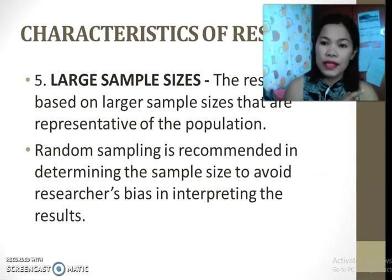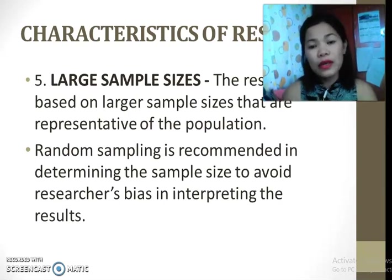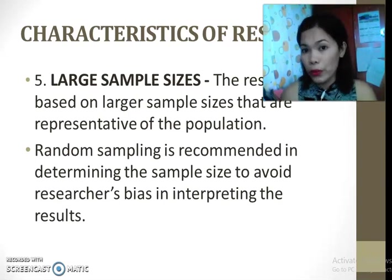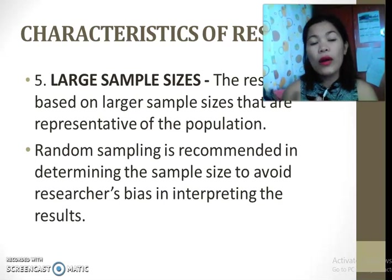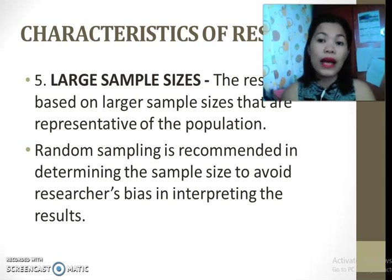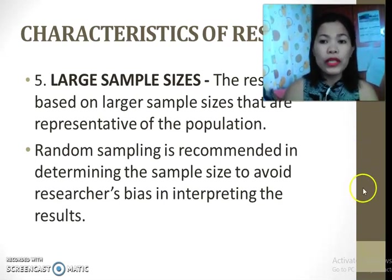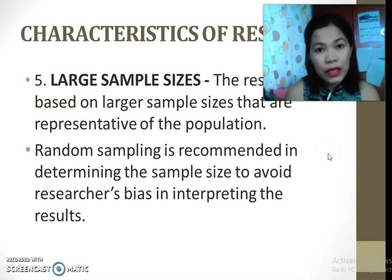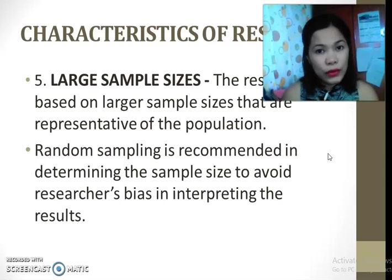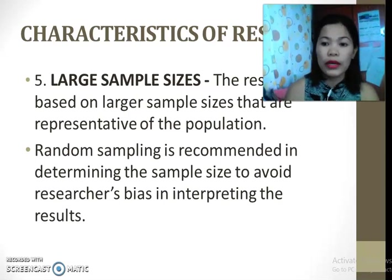Another characteristic is large sample sizes. In qualitative research, even one person or as few as ten persons as respondents is enough to gather data. However, in quantitative research, the larger the sample size, the more valid and reliable your results are. Since this involves sampling, in quantitative research it is non-negotiable — you really have to do random sampling. We will tackle that more later.